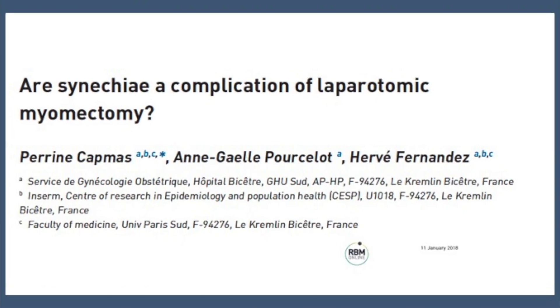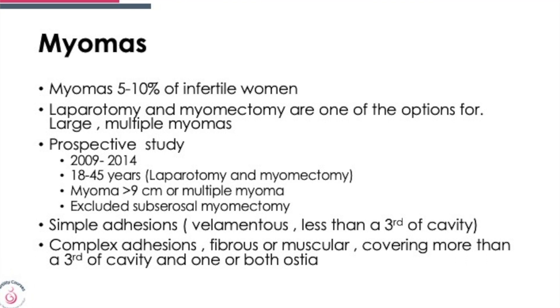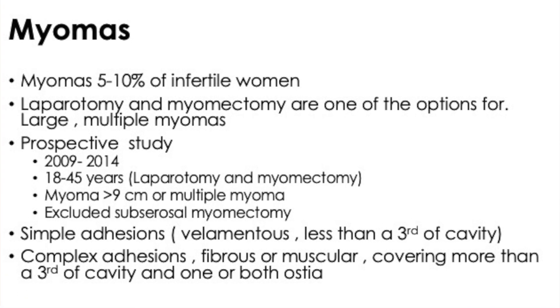Let's look at this paper. They looked at whether Asherman's syndrome forms as a complication of a myomectomy. They used a laparotomy and not a laparoscopy, but the overall logic should be the same. Laparoscopy is the preferred approach; laparotomy for very large fibroids may be the only option. Opening the cavity will have very much the same impact. This was a prospective study between 2009 and 2014, with patients 18 to 45 years of age, undergoing laparotomy and myomectomy for myoma of more than 9 centimetres or multiple myomas, excluding subserosal myomectomy.